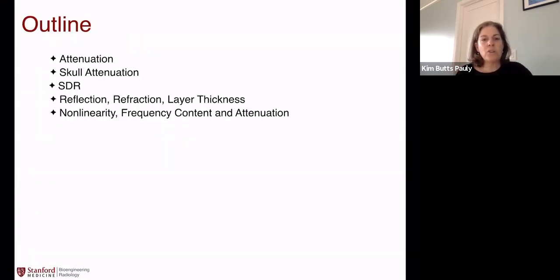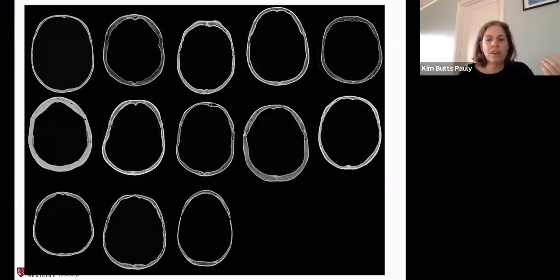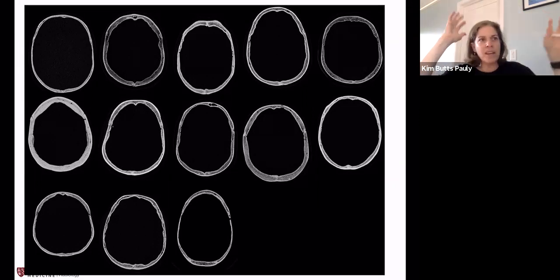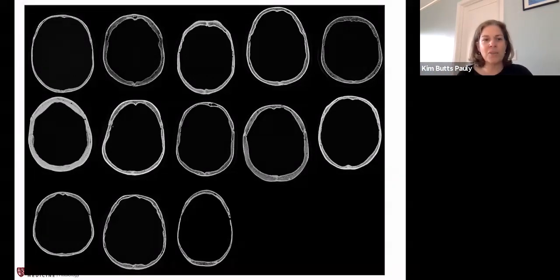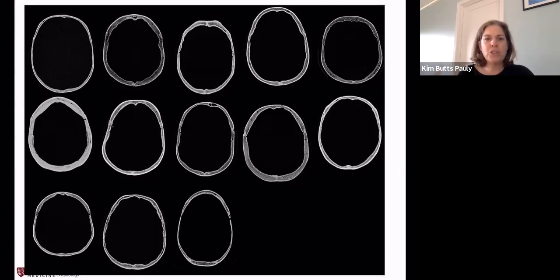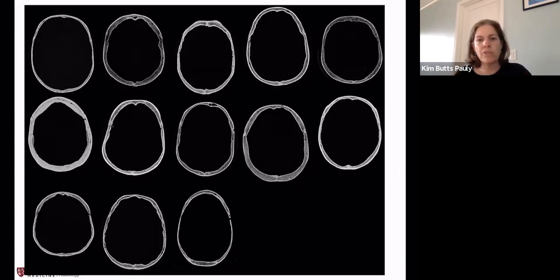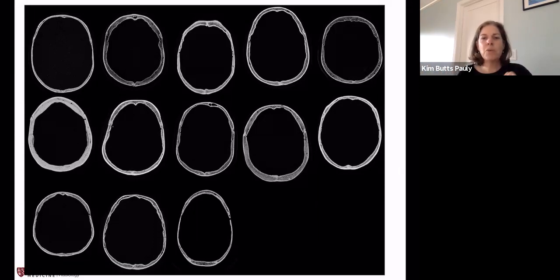So that's attenuation in general. Now let's talk about skull attenuation, because skulls are really interesting here. You can't get into the brain and do ultrasound neuromodulation without getting past the skull. You could take the skull off — and in fact, in the early years, the Fry brothers, who first worked on ultrasound neuromodulation, didn't know how to deal with the skull at the time, so they took the skull off. But we have a much better idea how to deal with the skull now.